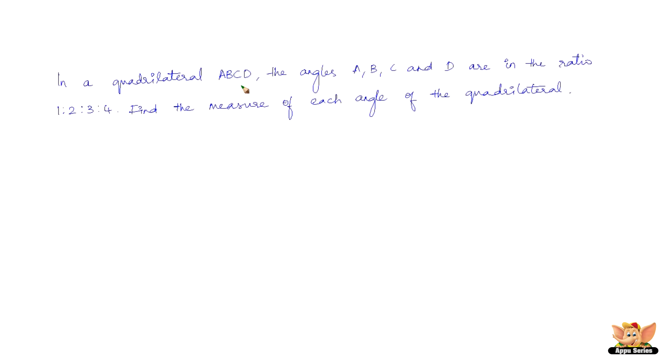In a quadrilateral ABCD, the angles A, B, C, and D are in the ratio 1 is to 2 is to 3 is to 4. Find the measure of each angle of the quadrilateral.